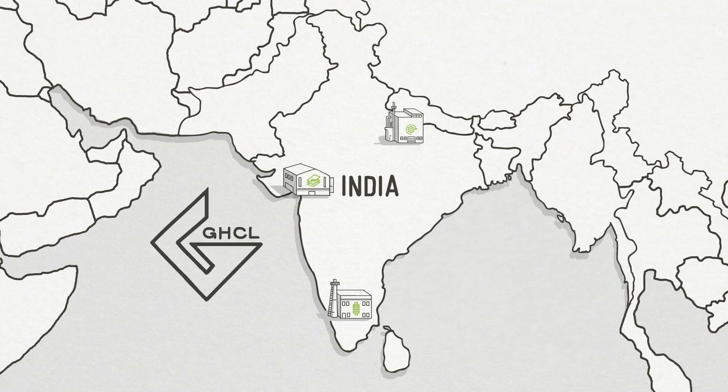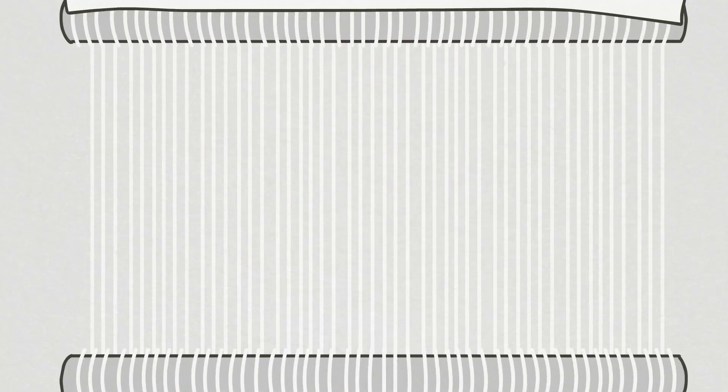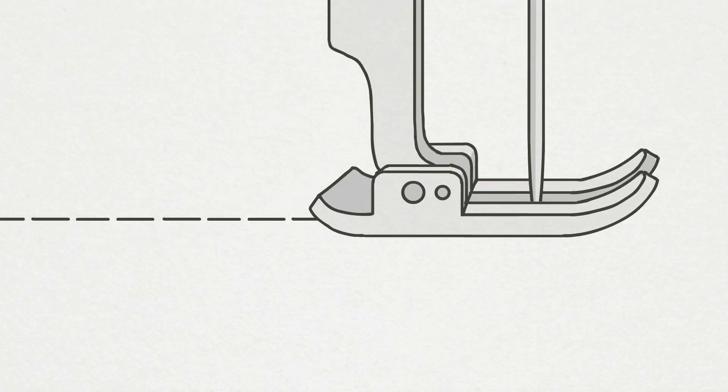Then the yarn is transferred to GHCL's home textiles plant in West India to be woven, processed, cut, and sewn into bedsheets, which are then shipped out to various parts of the world.